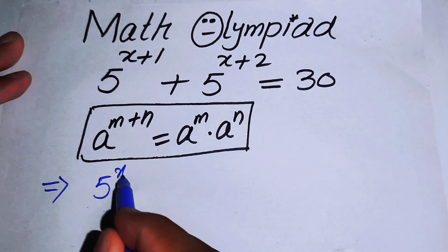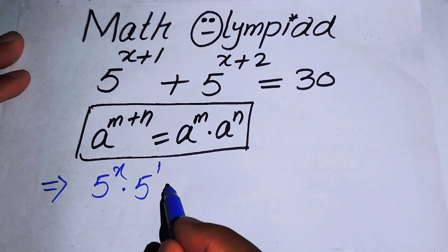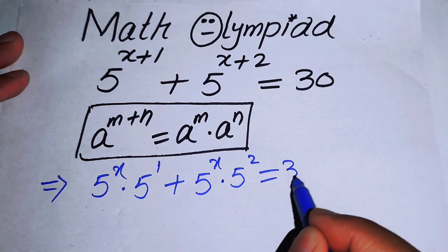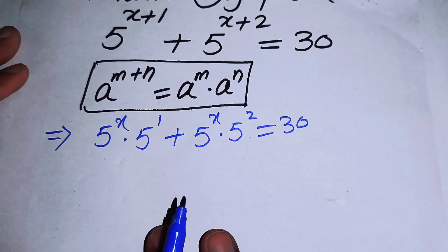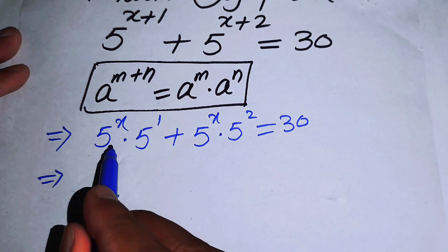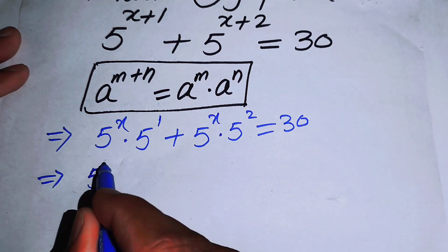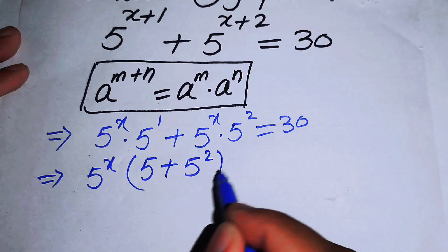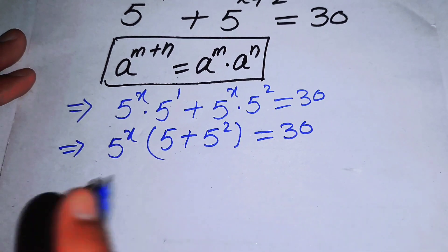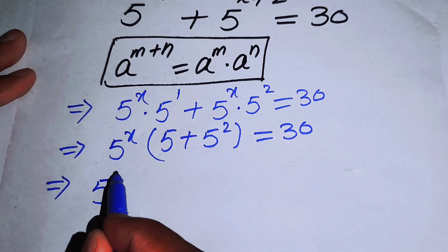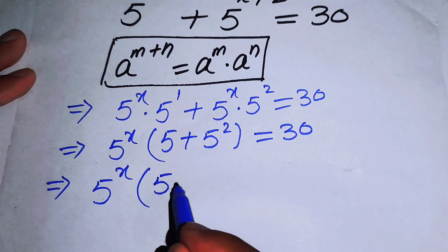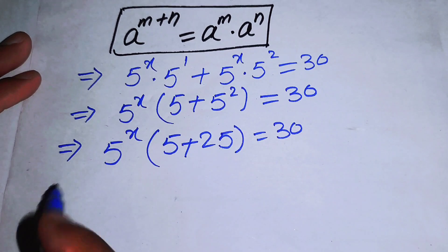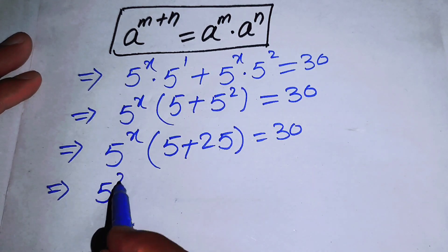Applying the law, we get 5 to the power of x times 5 to the power of 1, plus 5 to the power of x times 5 squared, equals 30. We then take 5 to the power of x common from both terms, giving us 5 to the power of x times (5 + 25) equals 30.